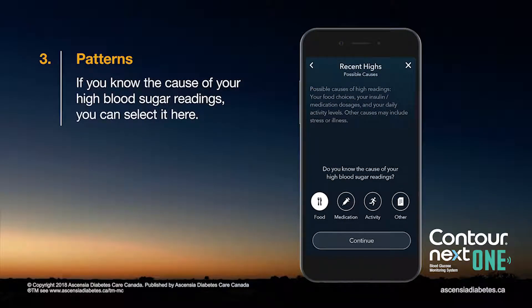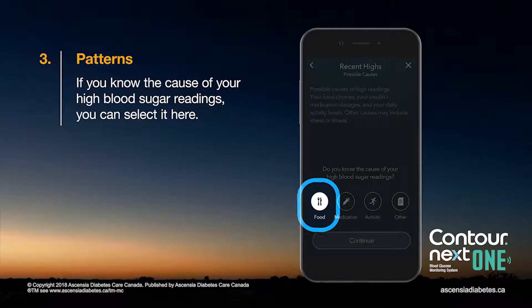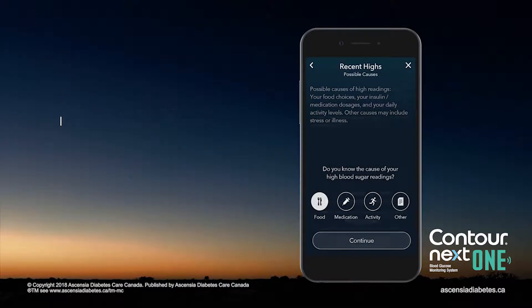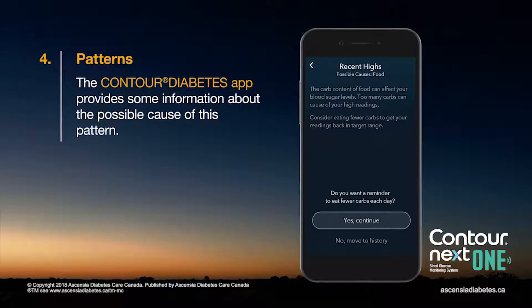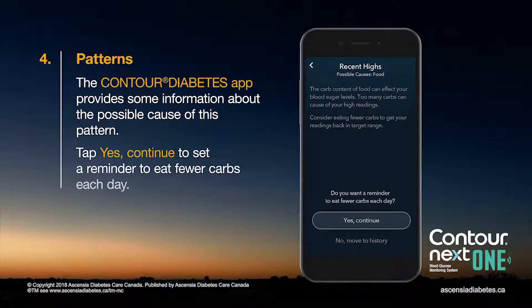If you know the cause of your high blood sugar readings, you can select it here. The Contour Diabetes app provides some information about the possible cause of this pattern.